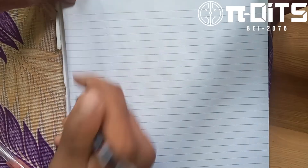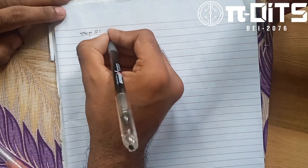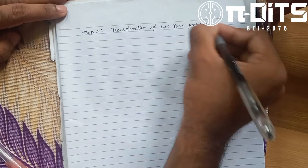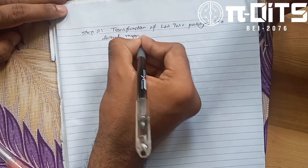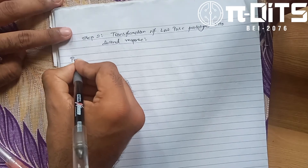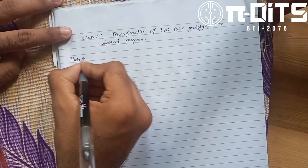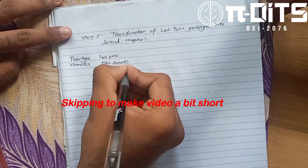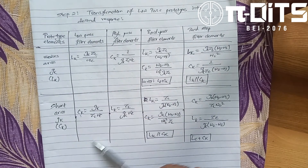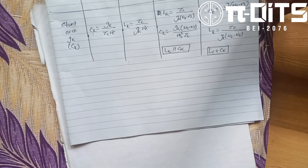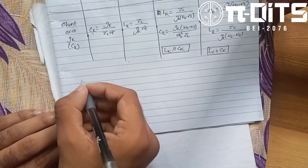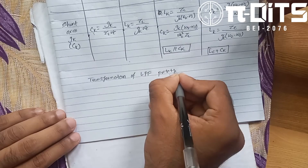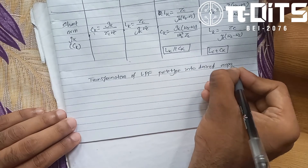Step two is the transformation of the low-pass prototype into the desired response. The two types of filter elements considered are the low-pass filter elements. This transformation converts the low-pass filter prototype into the desired filter response.